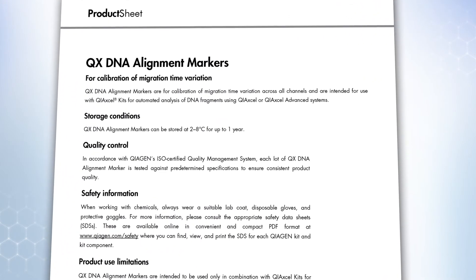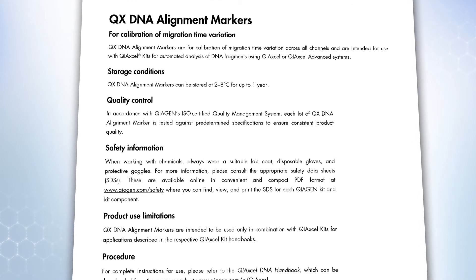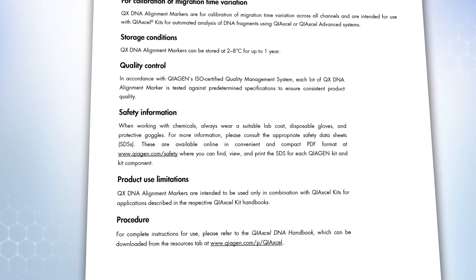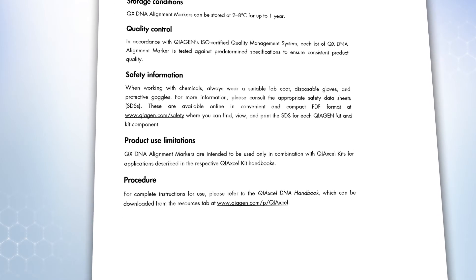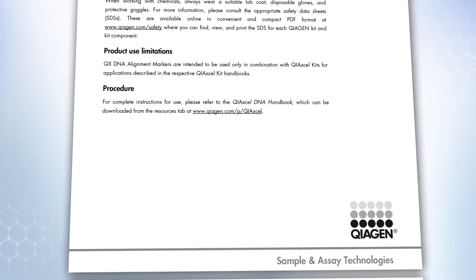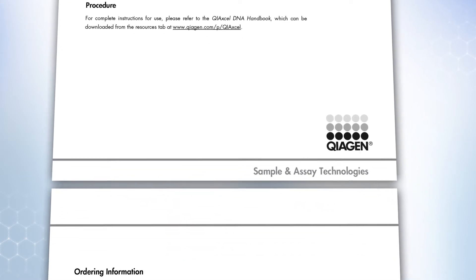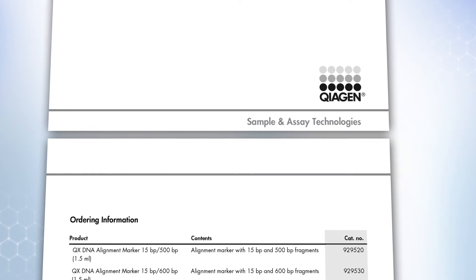The Kaixcel Alignment Marker is required in every run on every position to compensate for migration differences between the different capillaries. This prevents the smiley effect, which you would see on a classical agarose gel. There are different alignment markers available. Depending on the method you are using and fragment sizes being analyzed, select the appropriate alignment marker.